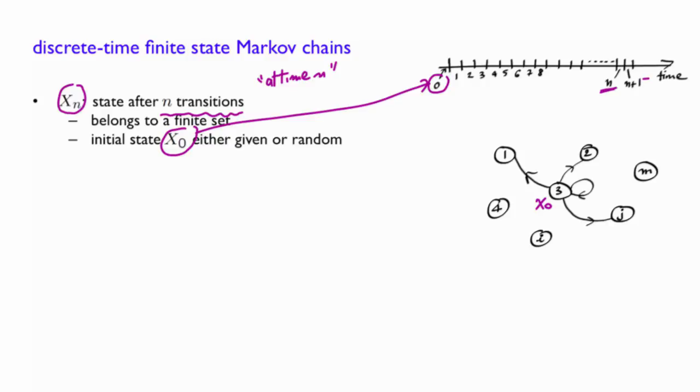Given that at time 0, the system is in state 3, what is the probability that it will be in state j next? These will be called transition probabilities. For example, the probability of going from 3 to 1 will be p31, here p32, here p33, and here p3j.